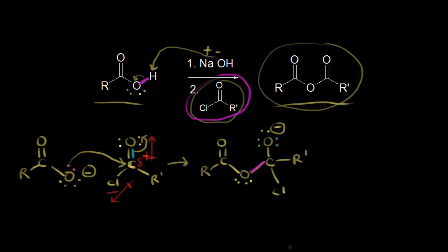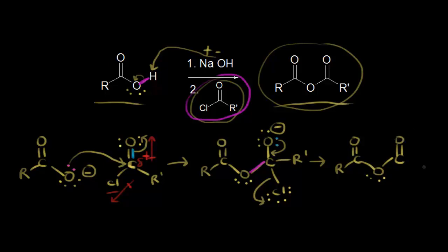When we think about the next step, the chloride anion is an excellent leaving group. If these electrons in blue move in to reform our double bond, then these electrons would kick off onto the chlorine to form the chloride anion, which is a stable leaving group. That forms our acid anhydride. We reformed our carbonyl, and the chloride anion was our leaving group, giving us the R prime group. We could make these R groups the same, or we could make them different — this is a good way of forming a mixed anhydride as well as a symmetrical one.